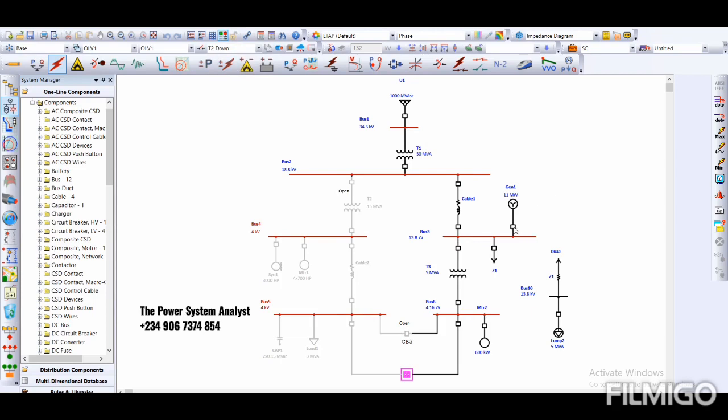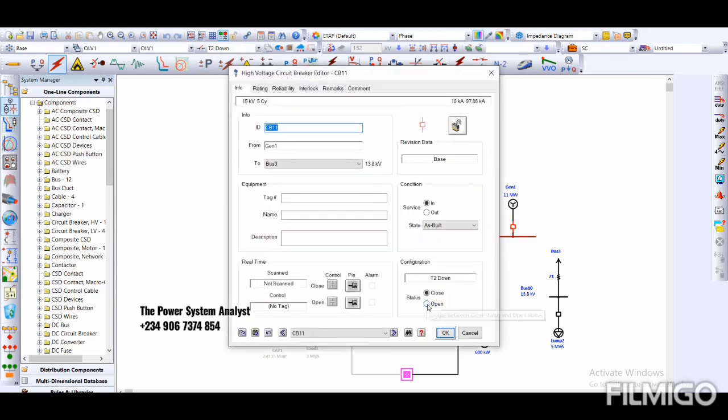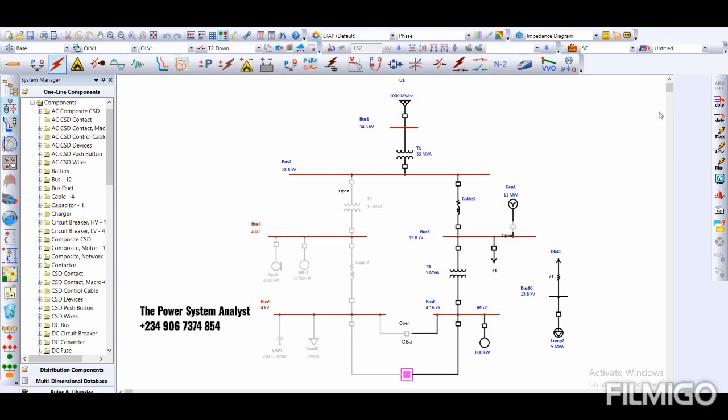Now bus 1 is 17.512. Let's go to another configuration, T2 down. 17.512, remember. Now it's 17.092. So you can check the fault current for different configurations which have already been designed by you in the network or from the existing network.